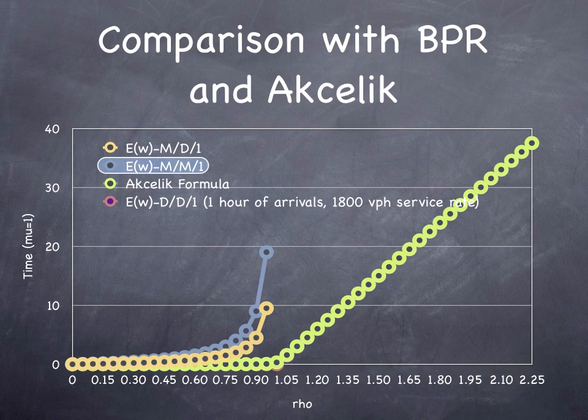Akcelik is an Australian researcher and his formula possesses some stochastic delay, so it's greater than zero at less than rho equals 1, but it really takes off when rho equals 1, so it bridges the two. The light green line shows this.